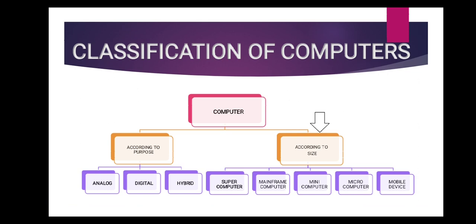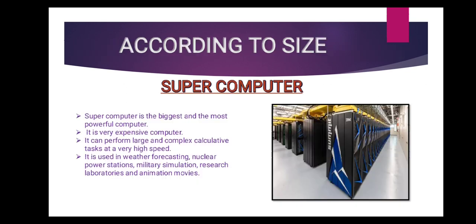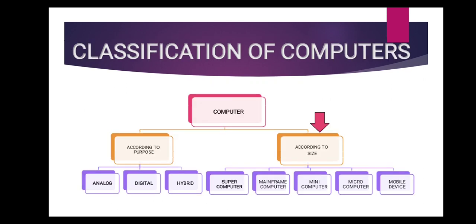Size means — is your computer small, big, or even bigger — depending on the size. So depending on the size, we have five categories, as you can see on this screen. First one is supercomputer. Second one is mainframe computer. Third one is mini computer. Fourth one is microcomputer. And fifth one is mobile device.